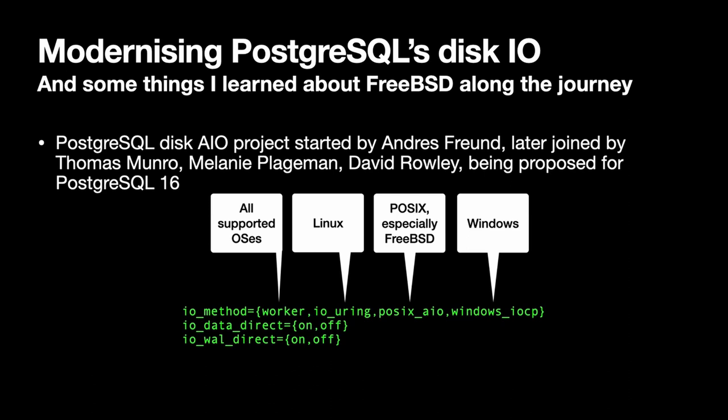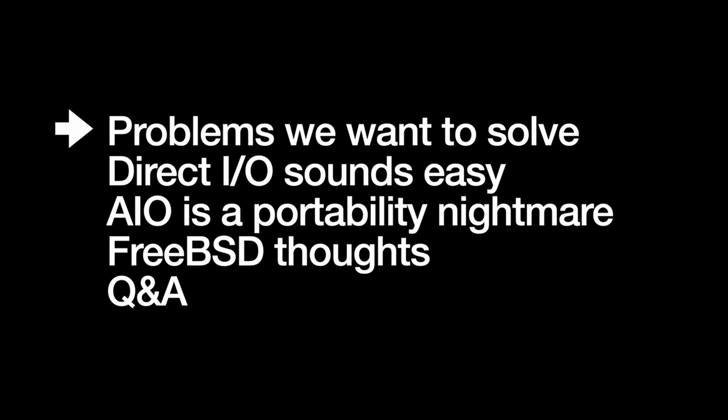There are also a couple of settings to control whether IO is buffered by the operating system or whether we try to use DirectIO. The talk will start with a quick overview of the problems we're trying to solve, then cover DirectIO and AIO, and some things I learned about FreeBSD along the way.